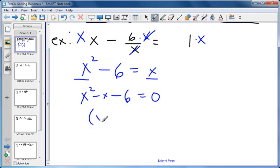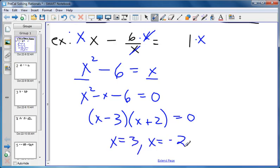So we need things that will multiply to be six, and add up to negative one. So we need a negative three, and a positive two. And if you set each of those equal to zero, you get x equals three, and x equals negative two.